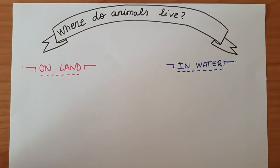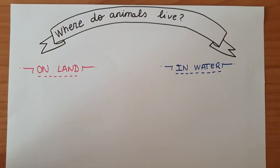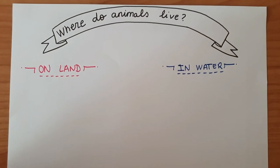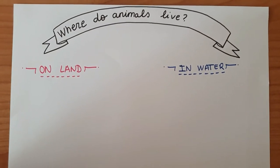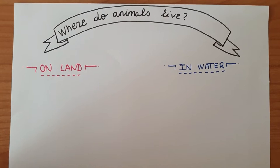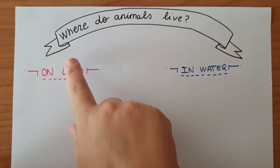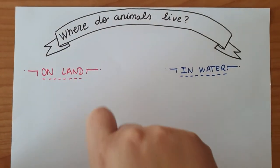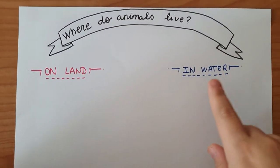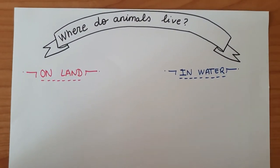Where do animals live? Animals can live in different places. They can live on land and they can live in water.